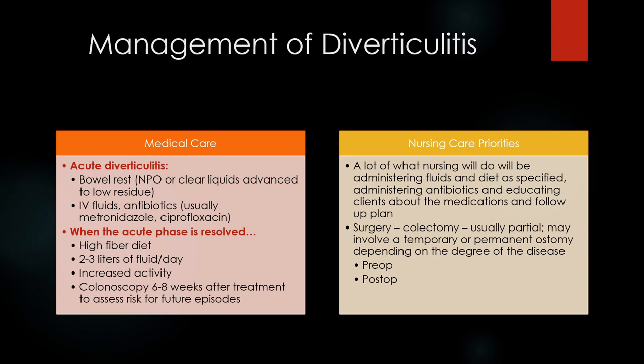They might end up with a temporary colostomy until the bowel can heal, or they might end up with a permanent colostomy for the rest of their lives. Diverticulitis increases the patient's risk for perforation exponentially — the more episodes, the more risk of perforation and then more risk of having a colostomy or an ileostomy. A lot of what we're doing as nurses is education, administering fluids, talking about their diet, administering antibiotics, educating them about medications and the follow-up plan, and providing pre- and post-op care if they do end up having a colectomy.